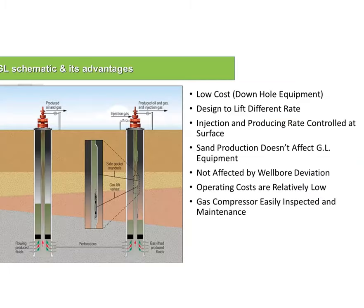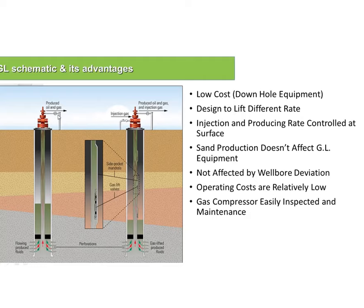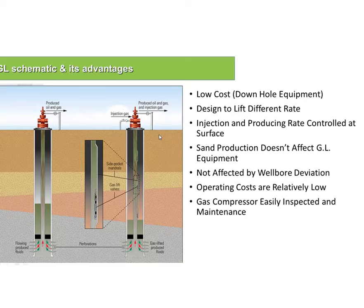Now let's speak about the gas lift concept and understand when to use it and what its benefits are. This is the schematic of gas lift. On a normal production well, we have production tubing, a packer, and a Christmas tree, with production flowing through the flow lines. With gas lift, I introduce a new gas injection line where high-pressurized gas goes through the annulus into the valve, mixes with the production fluid going up, and both flow up to the manifold and separator.